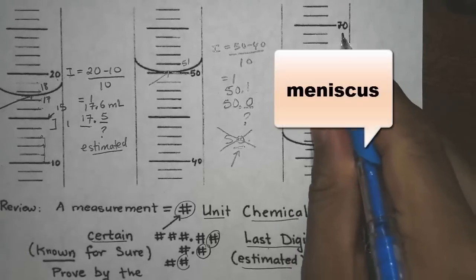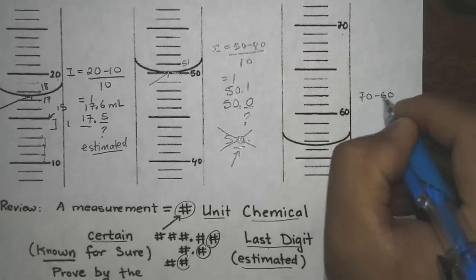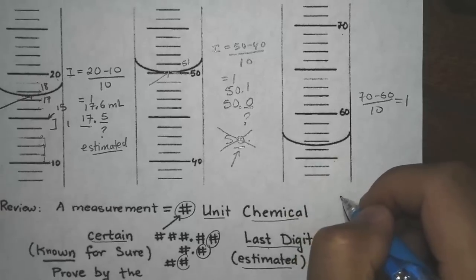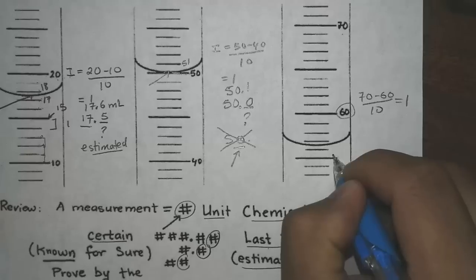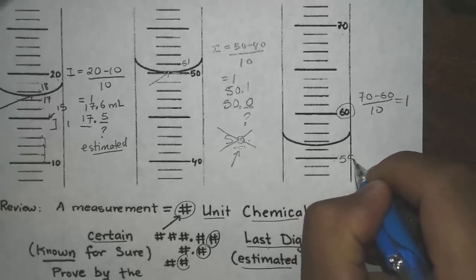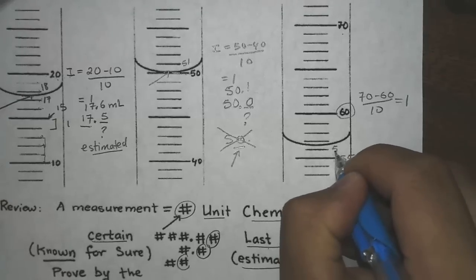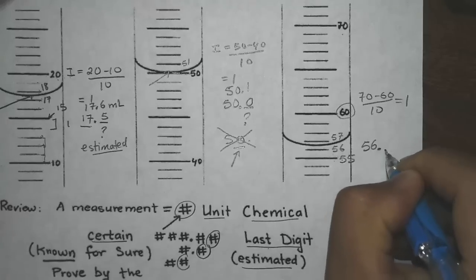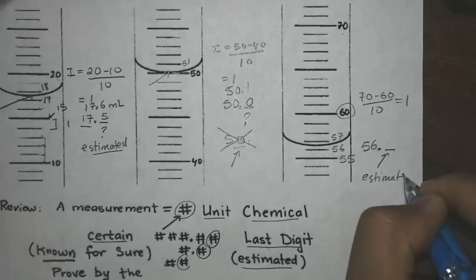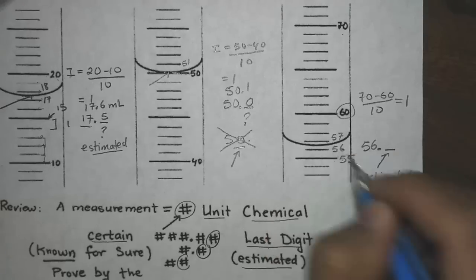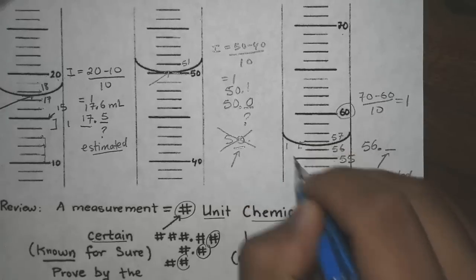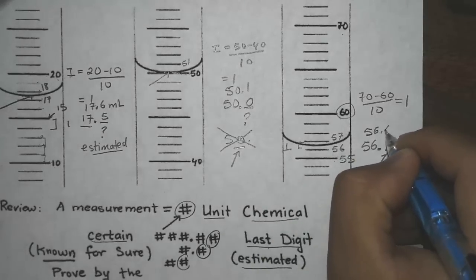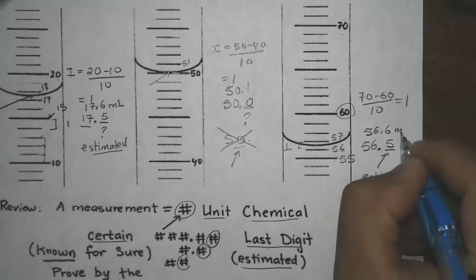Let's try another problem. Here we have 60 and 70, so (70 − 60) ÷ 10 = 1. But now we are reading downward. From 60, about 5 increments down is 55, then 56, 57. We know for sure this is 56 point something. The estimated digit is between 56 and 57 — about half of 1, which is 0.5. So the answer could be 56.5 or 56.6. The unit is milliliter.